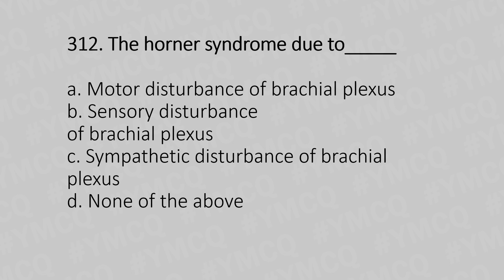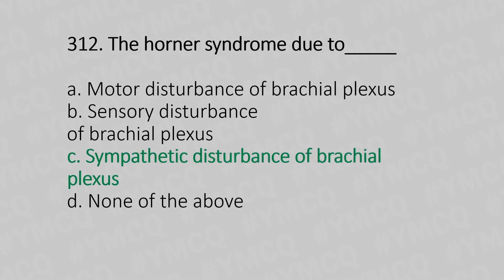Question 312: Horner syndrome is — Option B: sensory disturbance of the brachial plexus. Option C: sympathetic disturbance of the brachial plexus. Option D: none of the above. The answer is Option C, sympathetic disturbance of the brachial plexus.